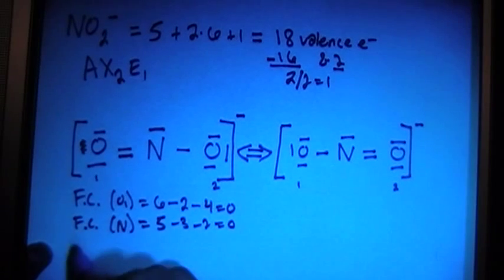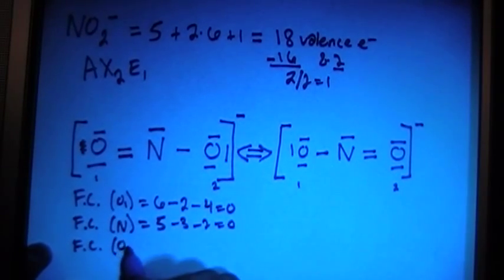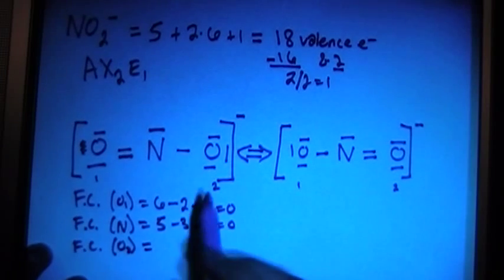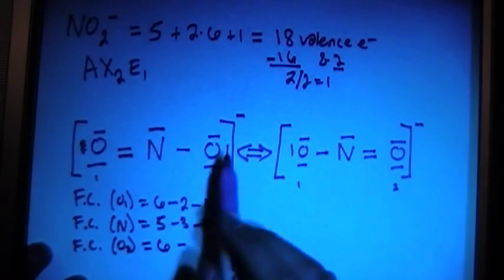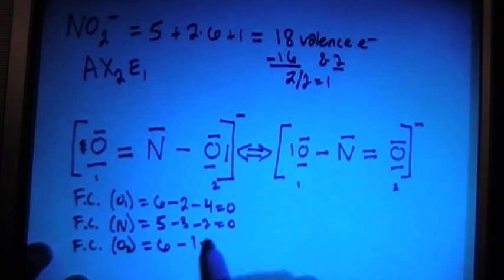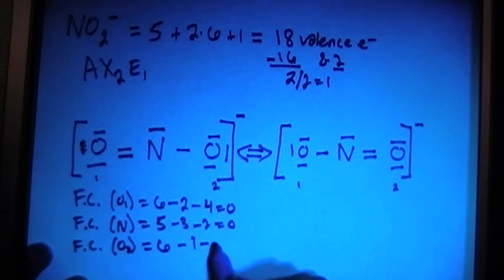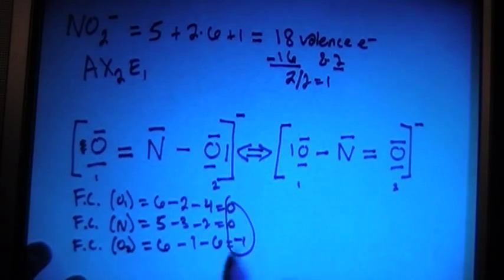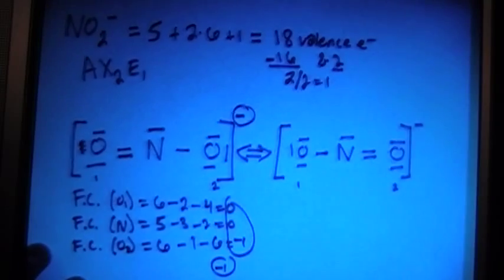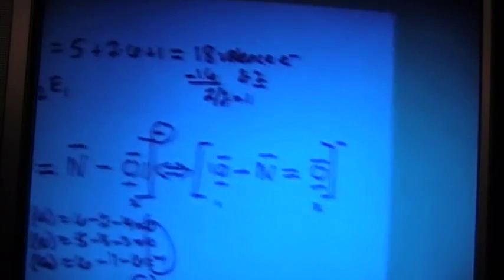And then the formal charge of oxygen 2 is going to give us 6 minus 1 bond, minus 2, 4, 6 electrons, that's negative 1. And if we sum all these up, it gives us a minus 1 overall charge, which matches the charge on the ion. So then this is a correct drawing.